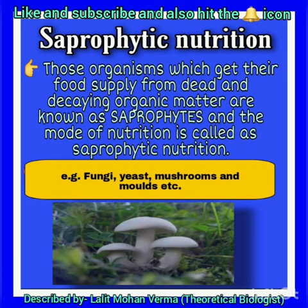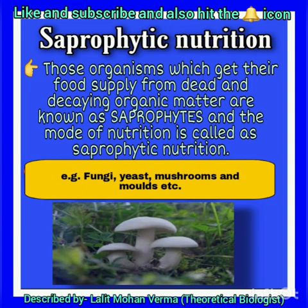The second one is saprophytic nutrition. Those organisms which get their food supply from dead and decayed organic matter are called saprophytes, and the mode of nutrition is called saprophytic nutrition. For example, fungi, yeast, mushrooms, and molds — you know, bread molds, that is fungus. You can see the mushroom on your screen as well. So all these are saprophytes.